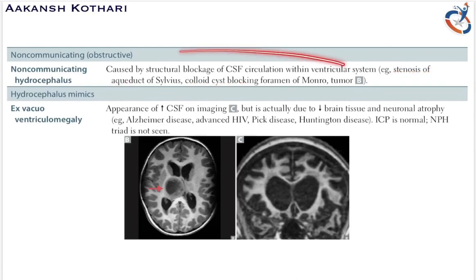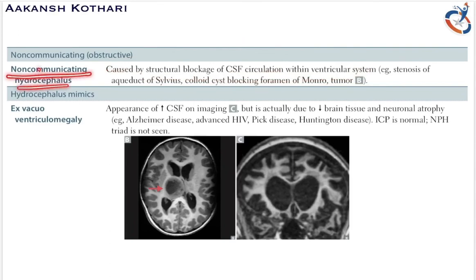Whenever there is a blockage of these structures or the aqueduct, it can lead to blocking of CSF circulation resulting in non-communicating hydrocephalus. This diagram shows a blockage in the ventricular system — a colloidal cyst blocking the ventricular system — leading to hydrocephalus.